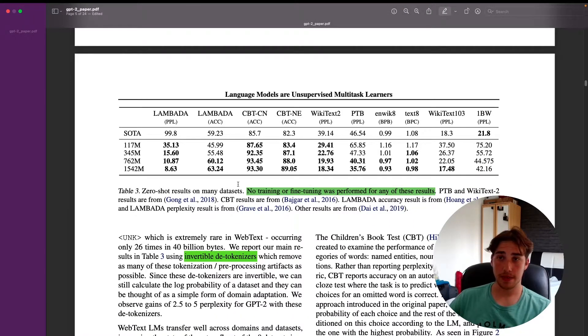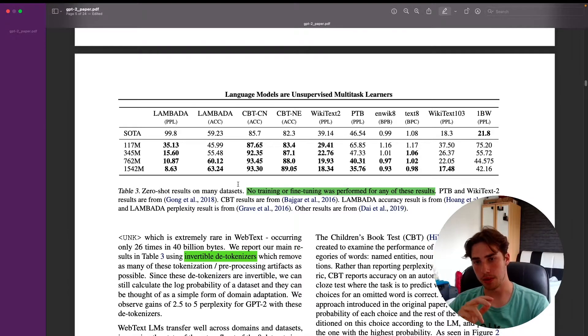Now we can actually look at the results they achieved. As I said before, they achieved seven state-of-the-art results out of eight datasets, and these are only language modeling tasks. Language modeling tasks mainly are based on predicting the next word in the sentence or in whatever text you pass into the model.